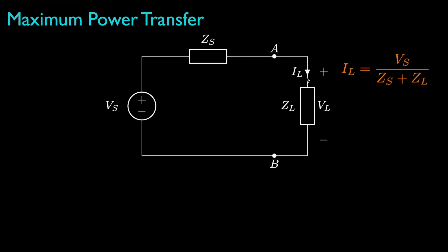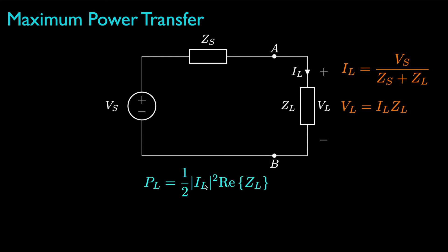The load current will be the source voltage divided by the series combination of the source and load impedances, and the load voltage will be the load current times the load impedance. From this load current and voltage, we can determine that the average power for the load will be one-half the squared magnitude of the load current times the real part of the load impedance, or the load resistance.